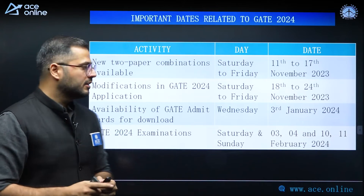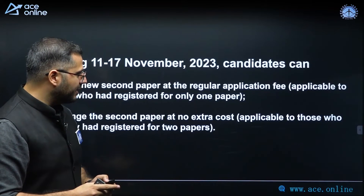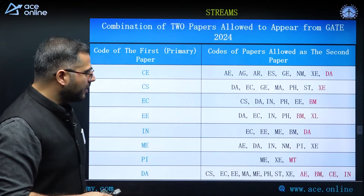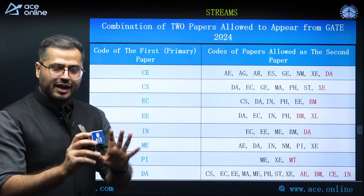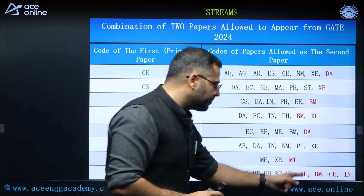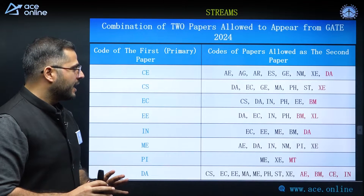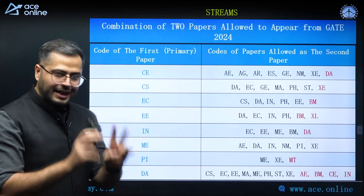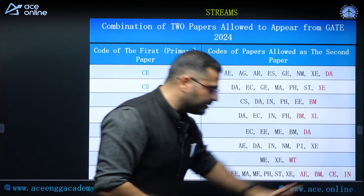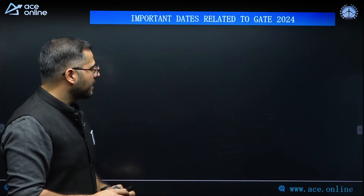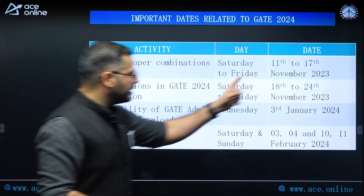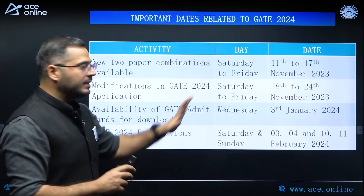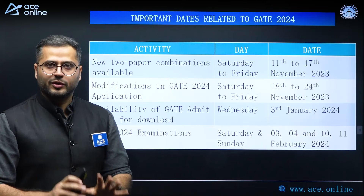There was also one other change regarding important dates. The table I mentioned previously shows the new papers which have been added, marked in red — you can take a screenshot of this. If you want to make changes to a secondary paper from these newly added red-marked streams, you can only do that in the window of 11th November to 17th November, as mentioned on the GATE 2024 official website.